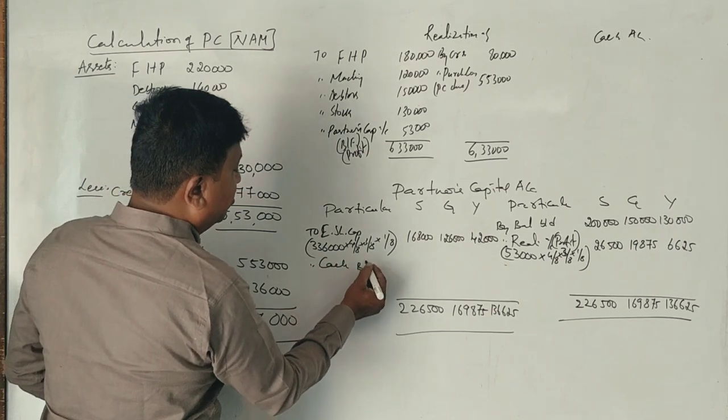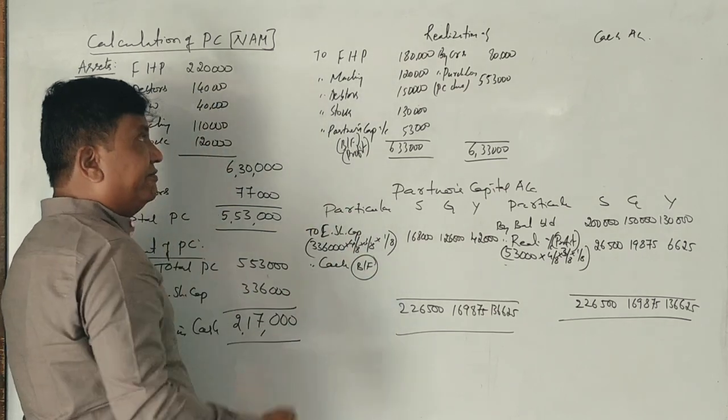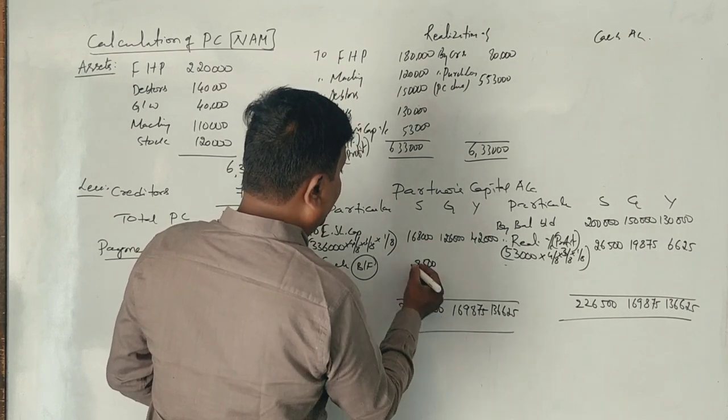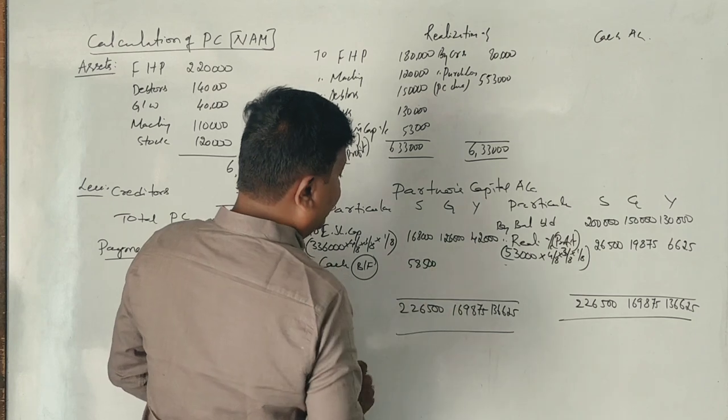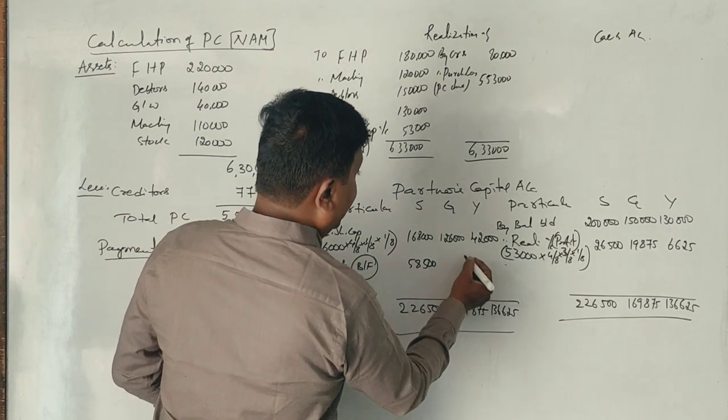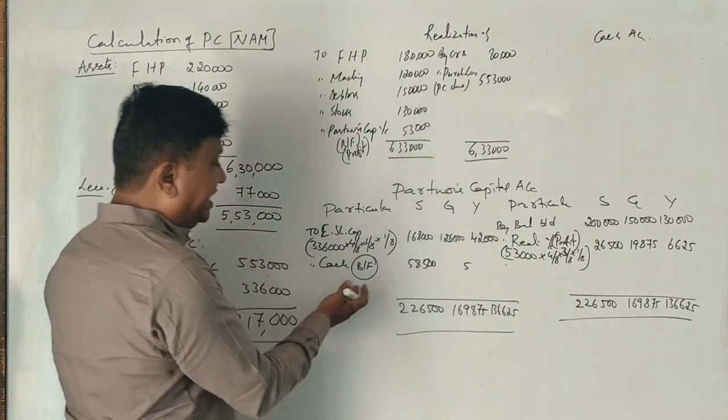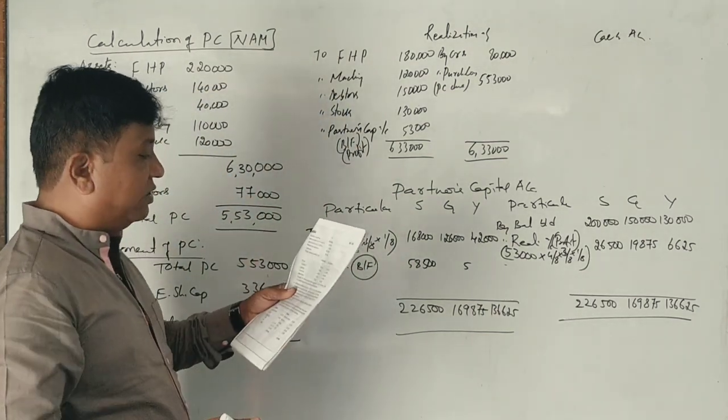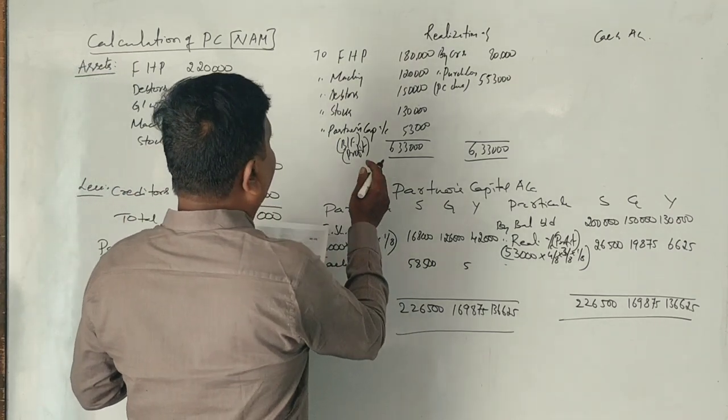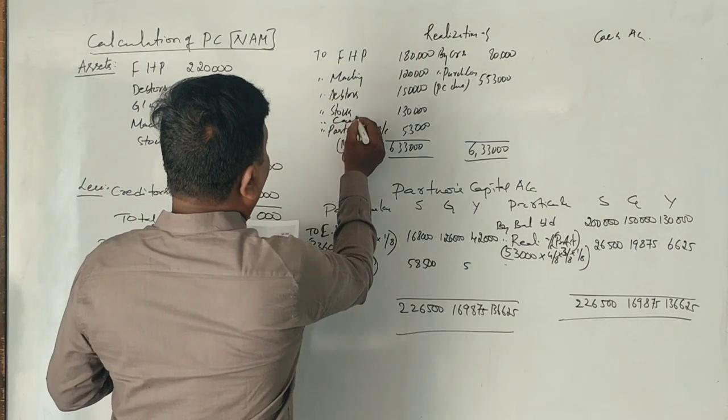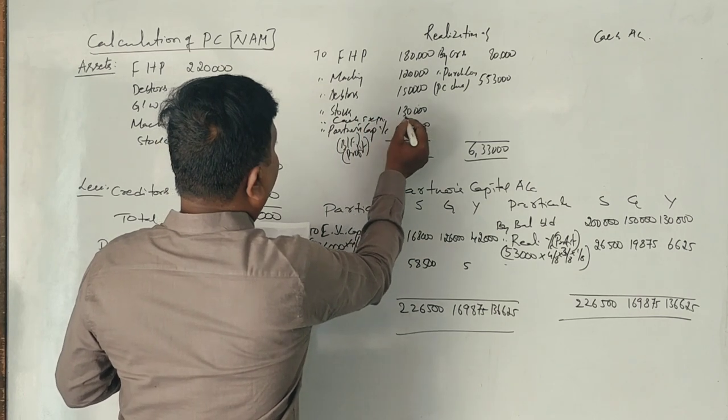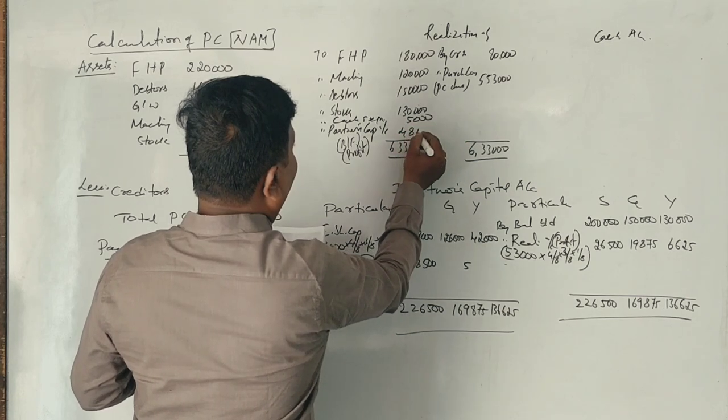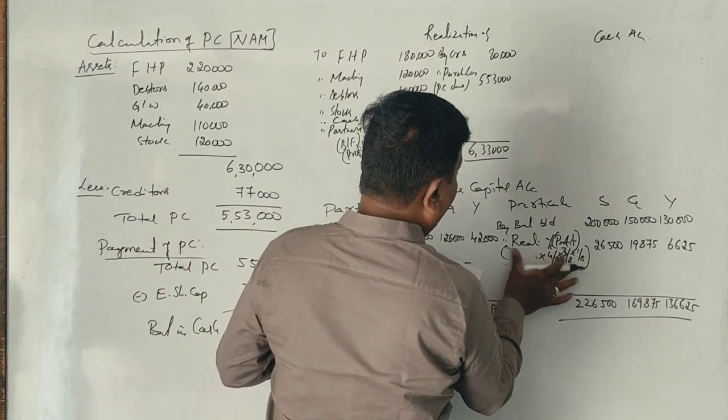Now the cash account. The cash balance and expenses. The cash account shows expenses of 5,000. After deducting expenses, we have 2,12,000 to distribute.